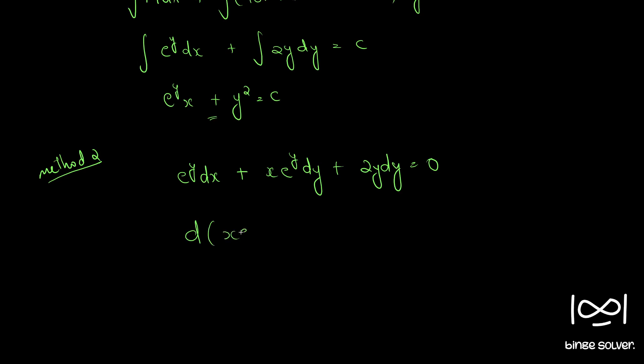x e raised to y. Right, if you differentiate this x e raised to y we get this e raised to y dx plus x into e raised to y into dy. Plus d of we can write this as y square, by y square is 2y so d of y square is equal to we can write d of